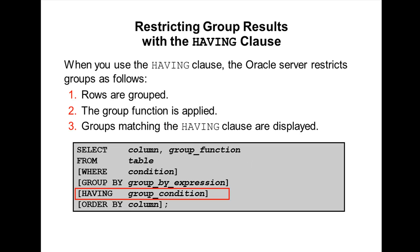The basic syntax is: SELECT column name, group function FROM table name WHERE condition GROUP BY expressions. We can use the HAVING clause to specify which groups are to be displayed, and thus further restrict the groups based on aggregated information.